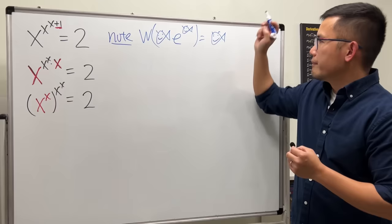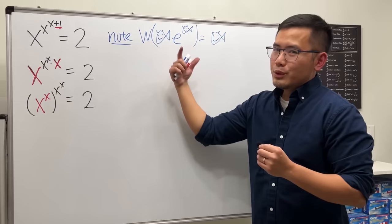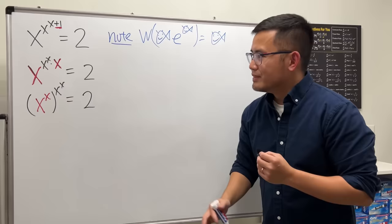So, in order for us to get ready for using the Lambert W function, we must have the e and the exponent and the front part, they must match. So let's have a look, see how we can do it.